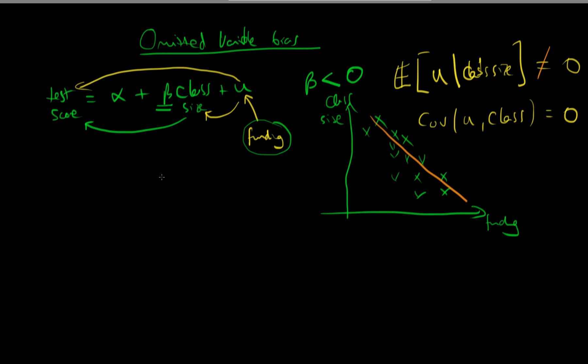So what does this mean for us? Well, it means that least squared estimates of beta, the population return to class size, is likely to be biased.